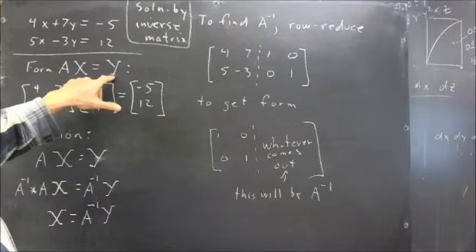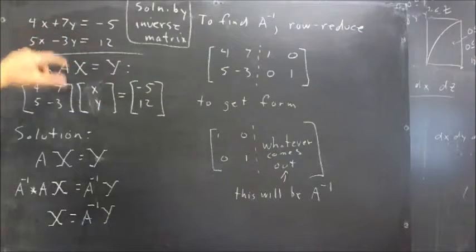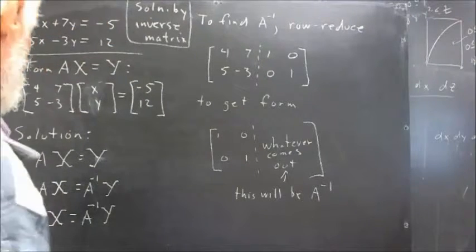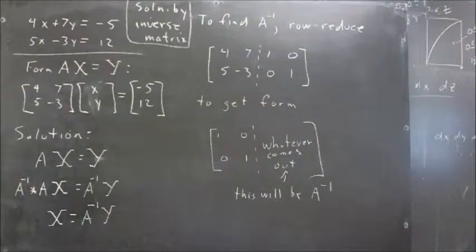The big Y doesn't have anything to do with the little Y. It's the column vector negative 5, 12, that comes from the right-hand side of the equation, the right-hand sides of the two equations.